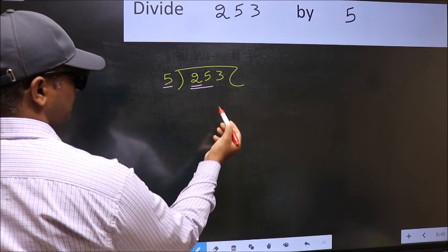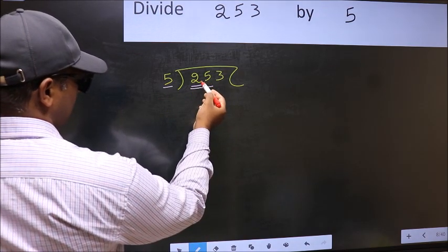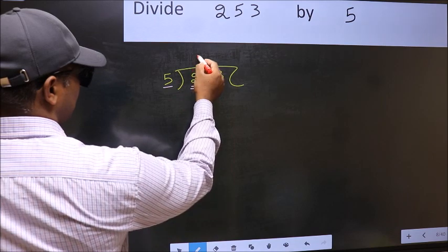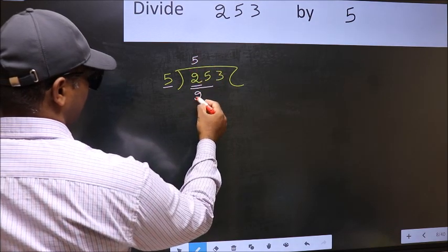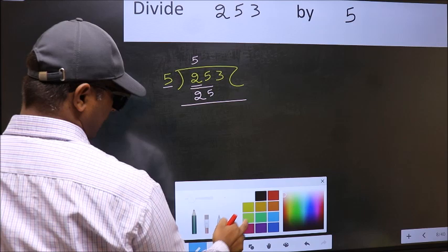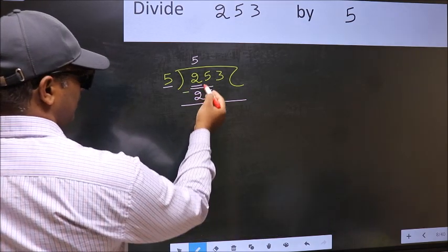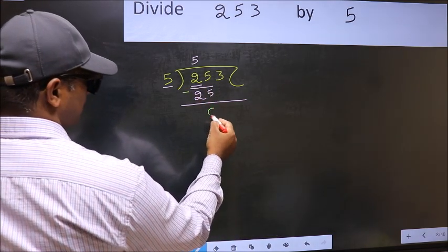So we should take 2 numbers, 25. When do we get 25 in 5 table? 5 fives 25. Now you should subtract. 25 minus 25, 0.